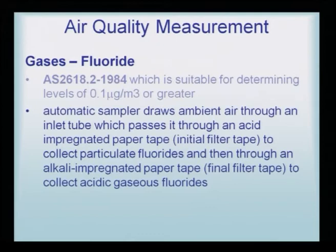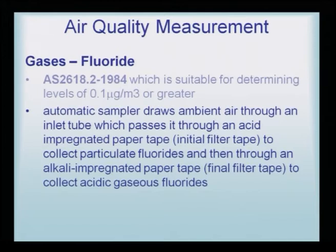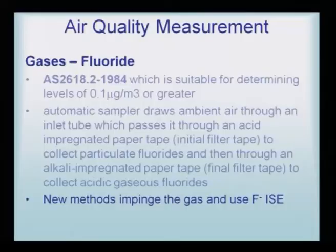An automated sampler draws ambient air through an inlet tube, passing it through an acid-impregnated paper tape — an initial filter tape to collect particulate fluorides — and then through an alkali-impregnated paper tape — a final filter tape to collect acidic gaseous fluoride. These two types of filter tapes are impregnated with different fluoride species and total gaseous fluoride is then evaluated. A newer method impinges the gas and uses a fluoride detector called FISE.